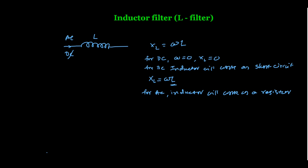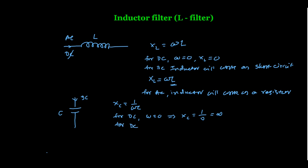We have another component which is a capacitor. The reactance of the capacitor is given by XC = 1/(ωC). Again, for DC, omega is 0, so this indicates that the reactance of the capacitor is going to be infinite. Infinite means the capacitor offers a very high resistance to DC current — the DC current cannot pass through the capacitor. For DC, the capacitor will work as an open circuit.